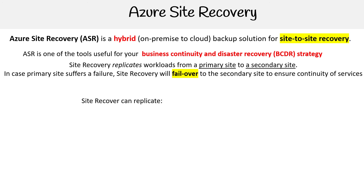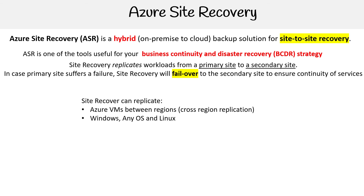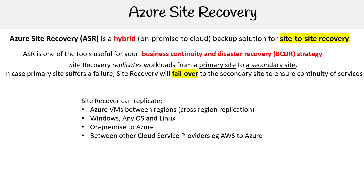It can replicate between Azure VMs, so if you want to do cross-region replication, that's what you could do. It can replicate Windows, Linux, or any OS. It can go from on-premise to Azure, which is usually the case people are using it for. It can actually replicate between different cloud service providers. And it can work with VMware, Hyper-V, and physical machines.